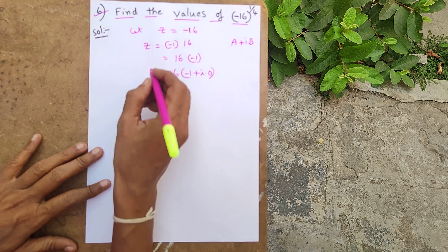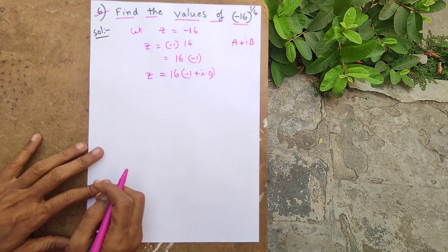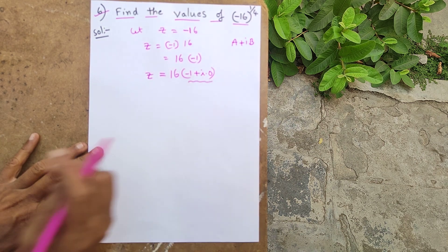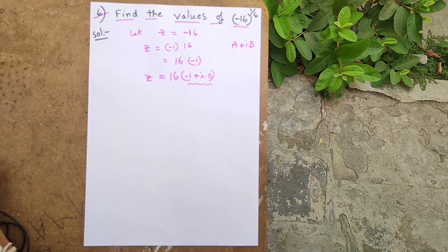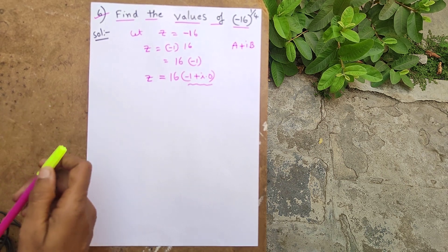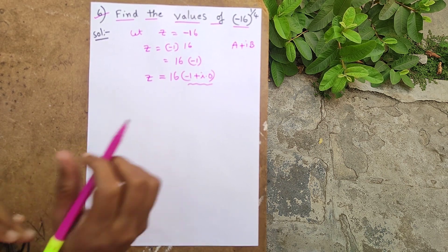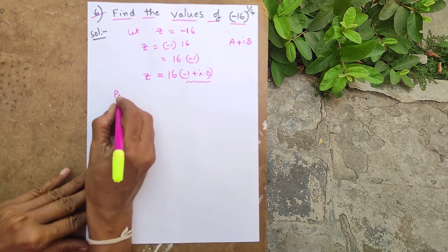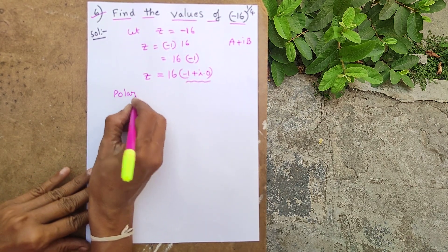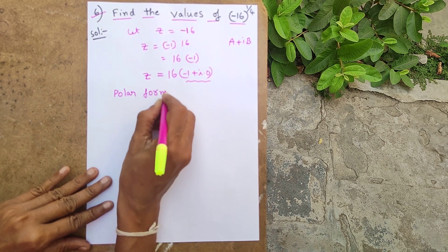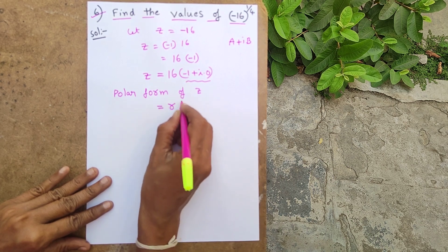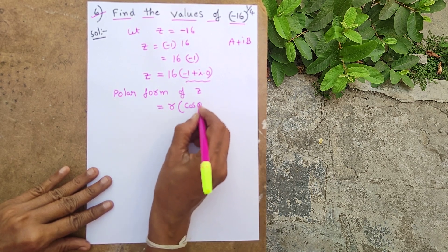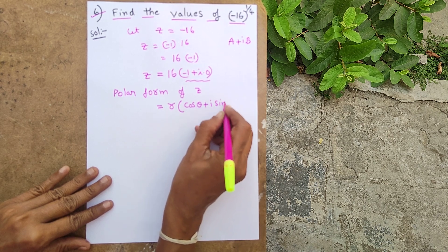The polar form of Z is written as r times cosθ plus i sinθ.